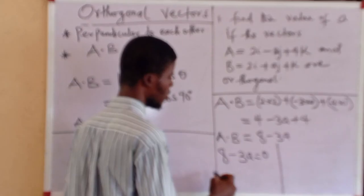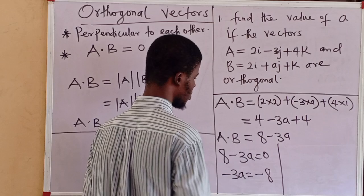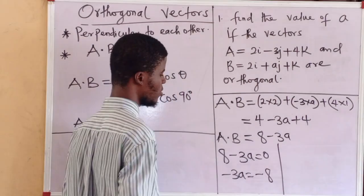So, 8 goes to the other side, we have minus 3A equal to minus 8. Divide both sides by minus 3.